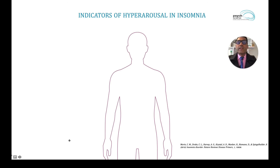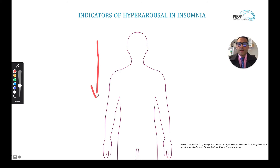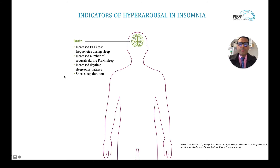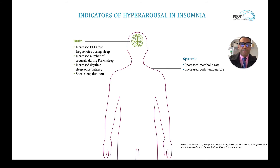Let's look at what are the indicators of hyperarousal in insomnia, because hyperarousal is one of the key aspects impacting sleep. When seeing individuals referred with insomnia, one of the things to rule out is hyperarousal — the top-down effects — alongside respiratory issues, restless leg syndrome, and REM sleep movement disorders. Indicators of hyperarousal in the brain include EEG fast frequencies during sleep, increased number of arousals during REM sleep, increased daytime sleep onset latency, and short sleep duration, as shown in a sleep study.